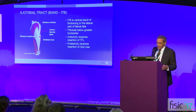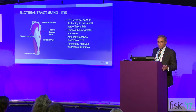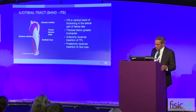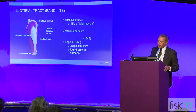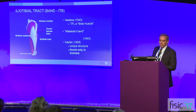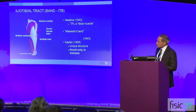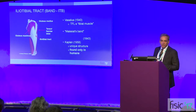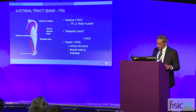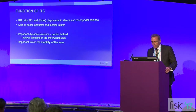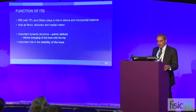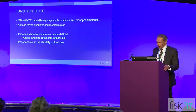The ITB is a vertical band of thickening in the lateral part of the fascia lata. It's thickest below the greater trochanter. It receives insertions from the TFL anteriorly and the gluteus maximus posteriorly. It was Kaplan in the 1950s who found this was a unique structure found only in humans — the ITB is really what separates us from all the other animals. It plays a role in stance and monopodal balance, acts as a flexor, abductor, and medial rotator, and has been described as the pelvic deltoid.